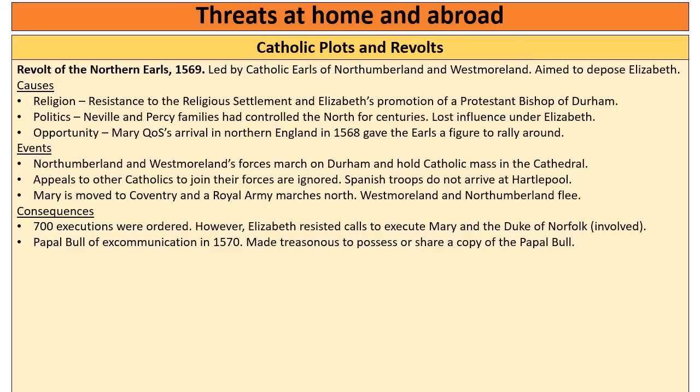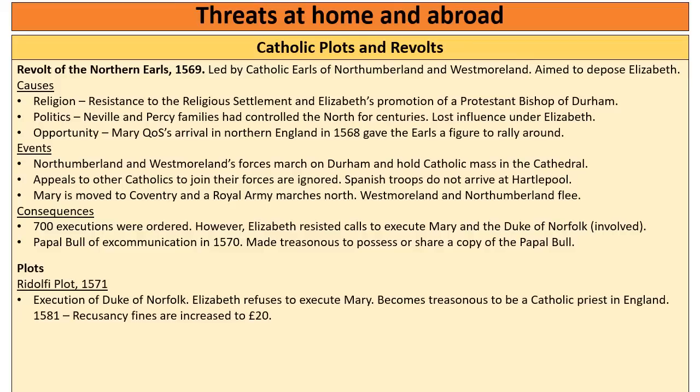That is the biggest rebellion Elizabeth faces in her reign. After that there are no more rebellions, but there is a series of secret plots to try and murder her. The first is the Ridolfi plot of 1571. All three plots ultimately fail — more important for us to know about are the consequences. The Ridolfi plot leads to the execution of the Duke of Norfolk, the most powerful nobleman in all of England, who was involved in the plot and had converted to Catholicism. This shows how seriously Elizabeth took the plot.